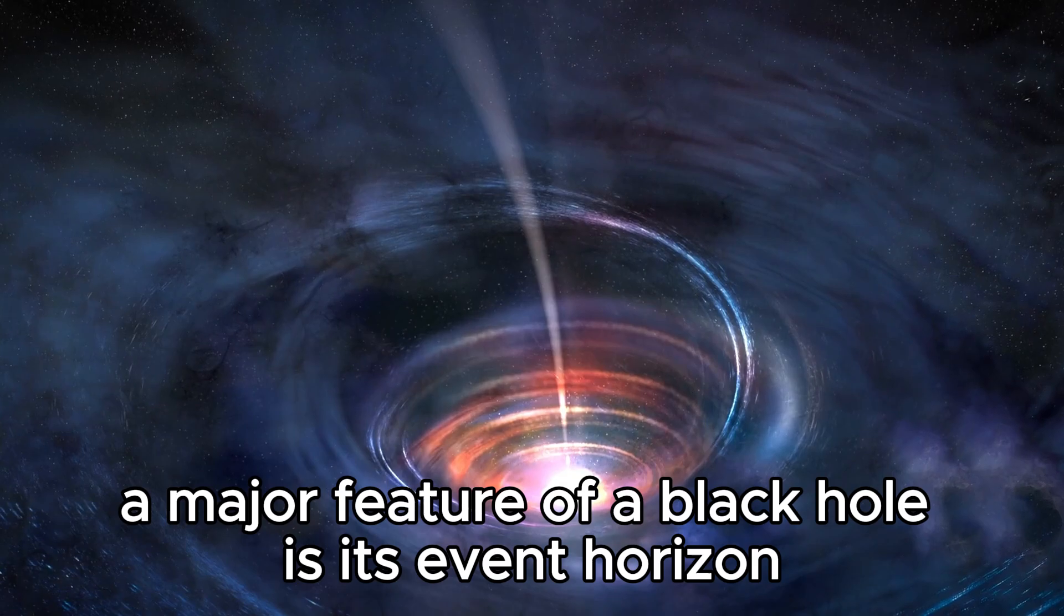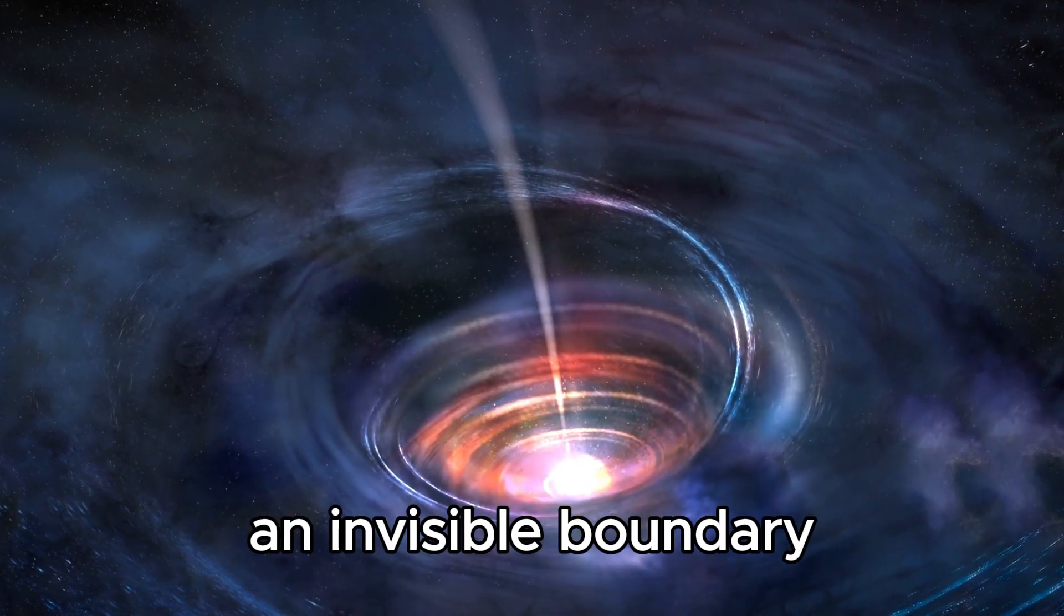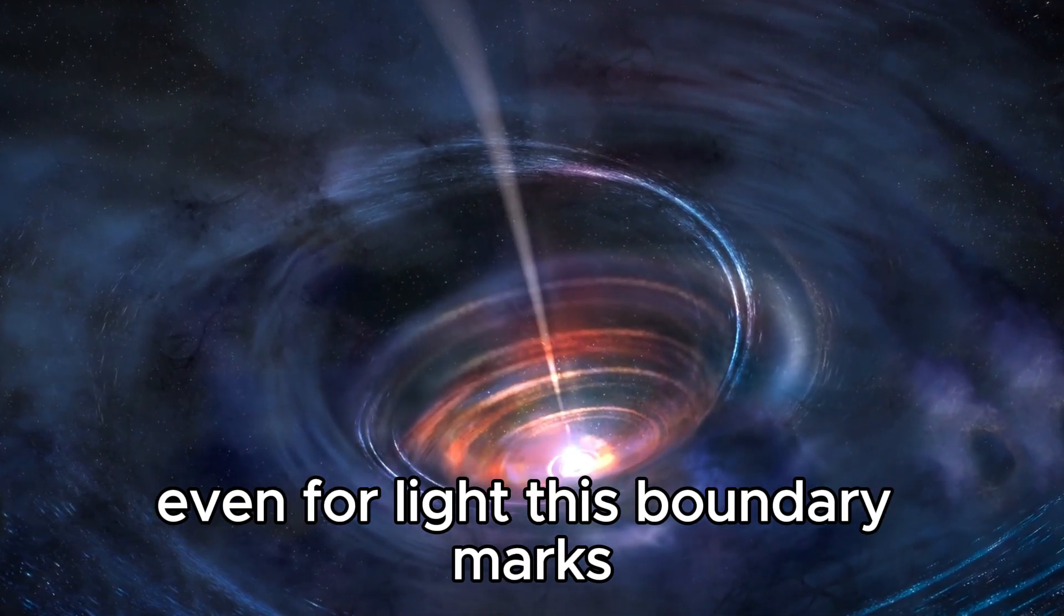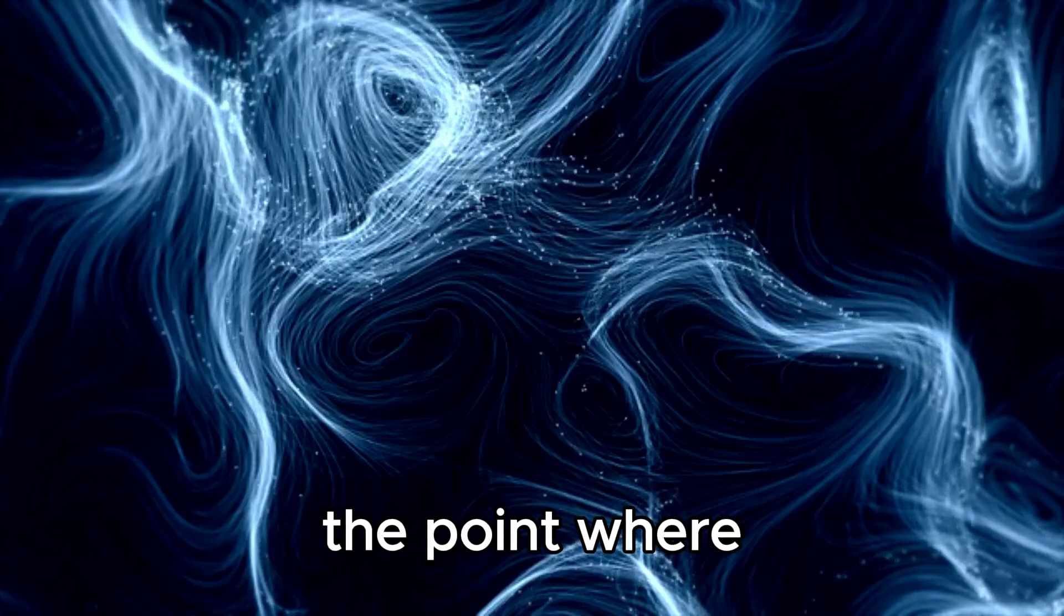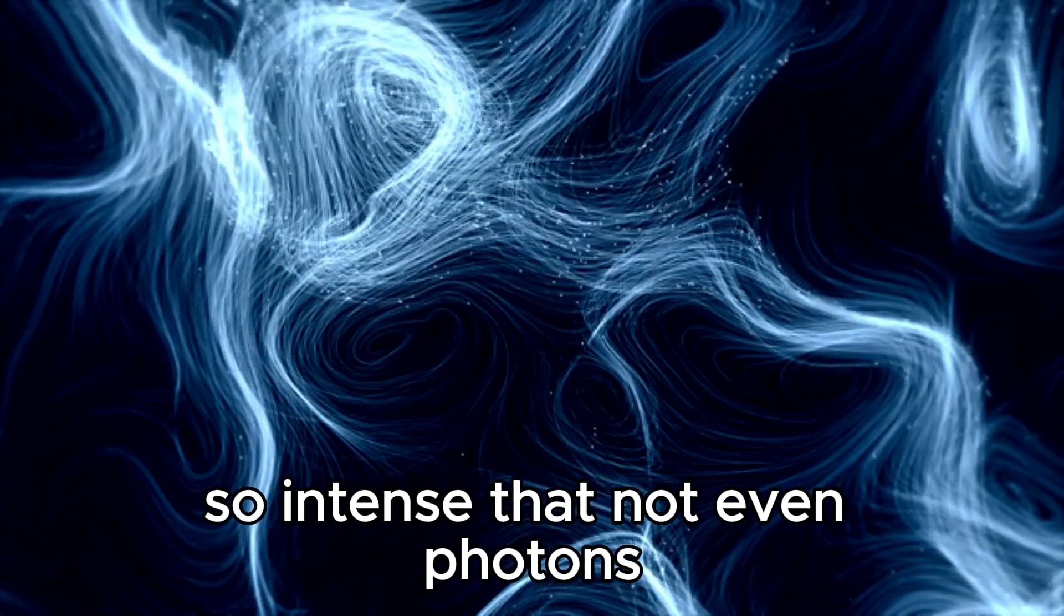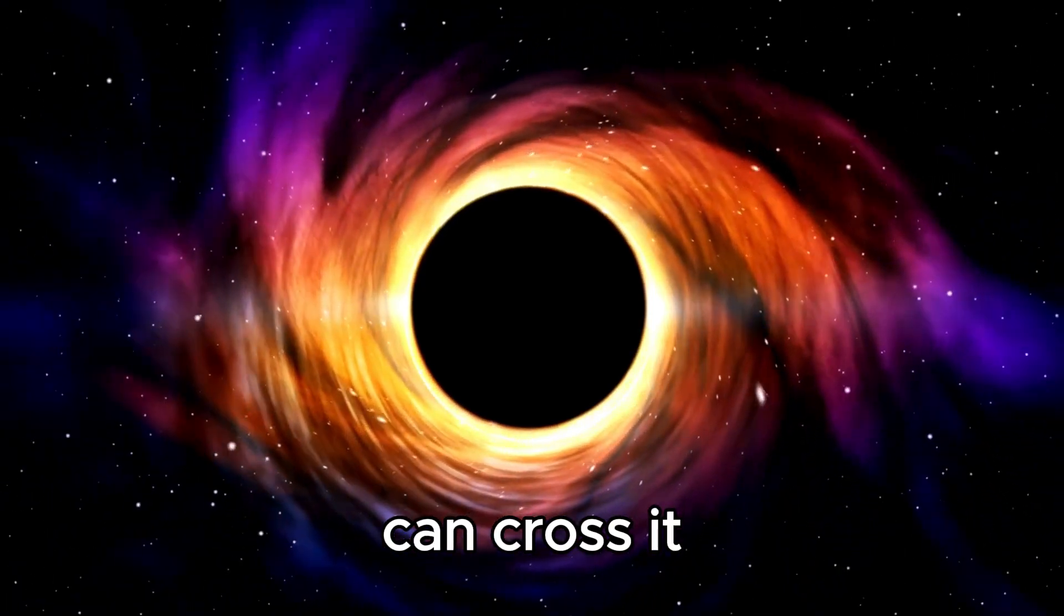A major feature of a black hole is its event horizon, an invisible boundary beyond which escape becomes impossible, even for light. This boundary marks the point where the gravitational pull of the black hole becomes so intense that not even photons, the fastest particles in the universe, can cross it.